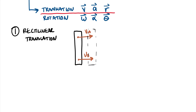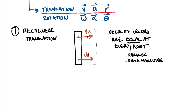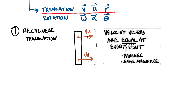This is actually the case we dealt with most in the first half of this class. When we treated something as a particle, we assumed that every point on that body had the exact same velocity. To write this out: velocity vectors are equal at every point — meaning they are parallel and also have the same magnitude. Every vector is made up of both a magnitude and a direction, so if we say a vector is equal to another vector, both of those things have to be paired up.